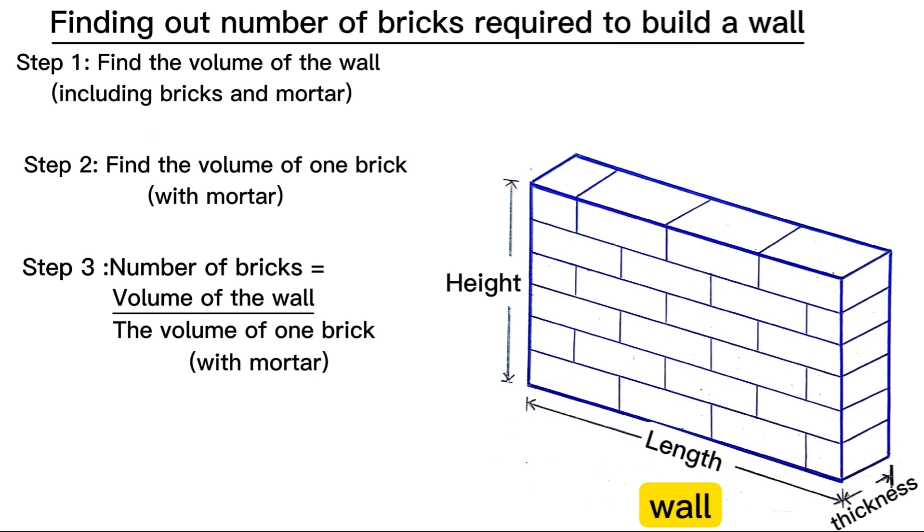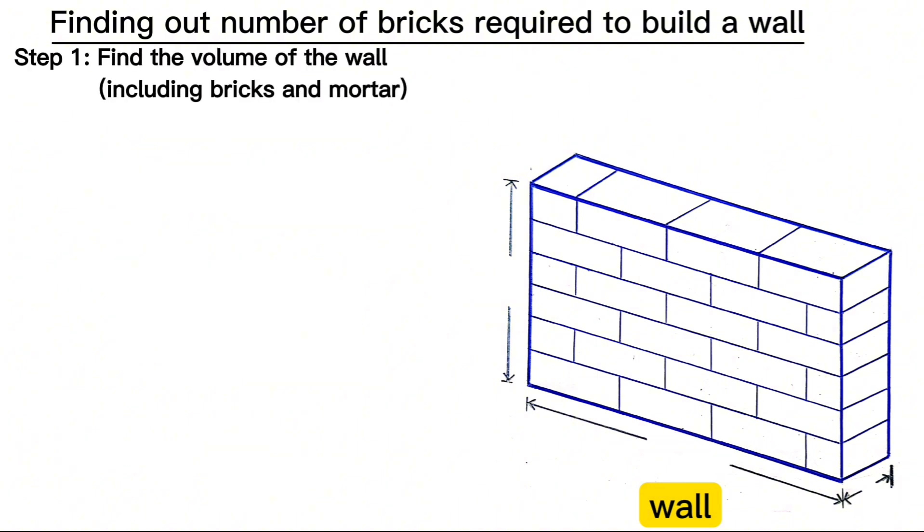Step one: considering a stretcher bond wall of 10 meters along the length and 3 meters along its height, with wall thickness of 160 millimeters, volume of the wall here is 4.8 meters cubed.